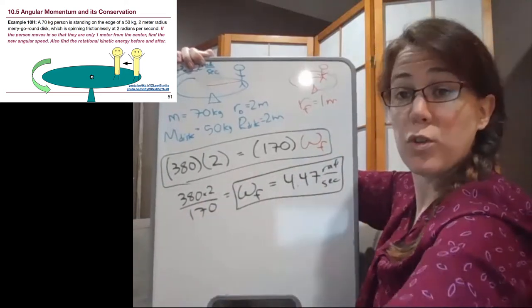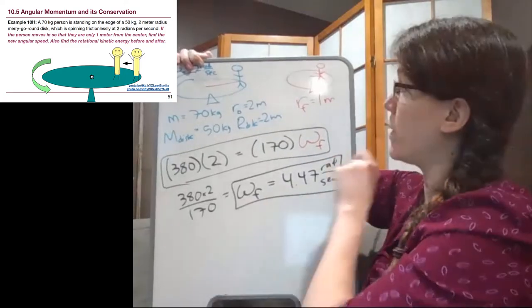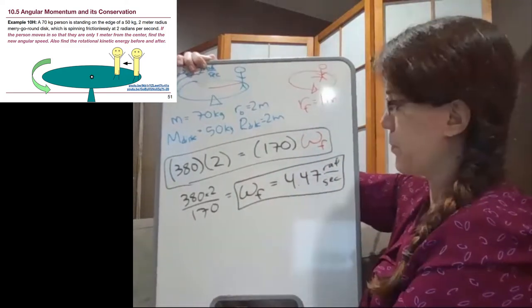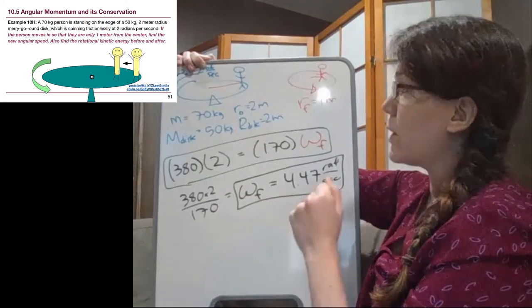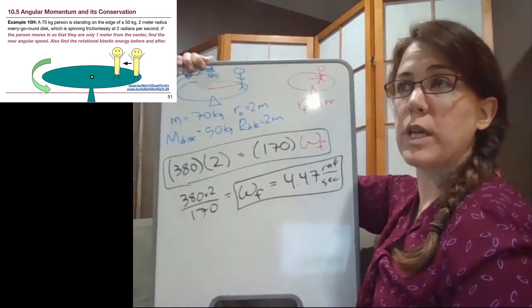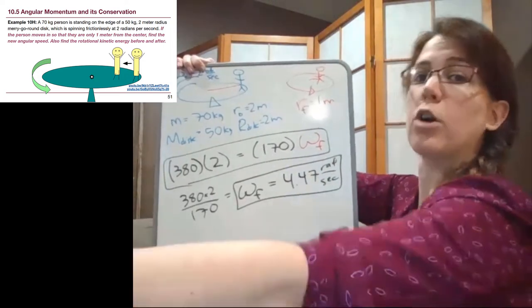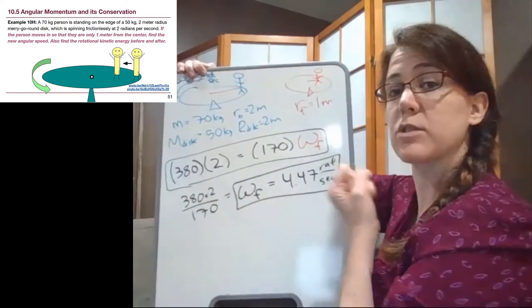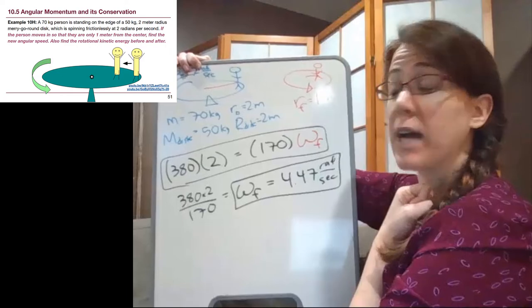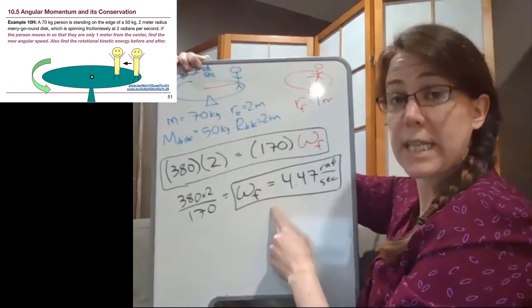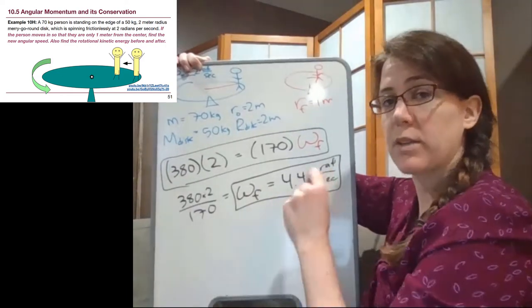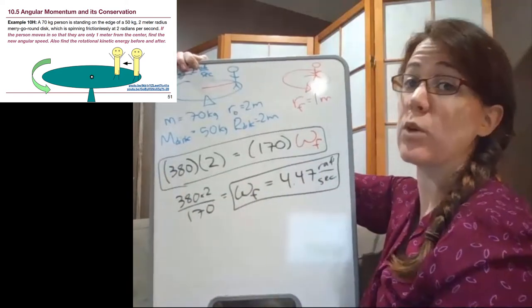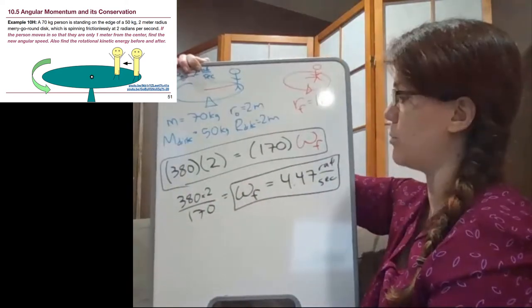That is the new angular speed when that person walks inwards towards the center. So in a very similar way to the ice skater who has their arms outstretched and is spinning slower, and then brings their arms in and is spinning faster, we should expect a number where we are rotating faster, because that mass has moved inwards. It is now easier to rotate that object.